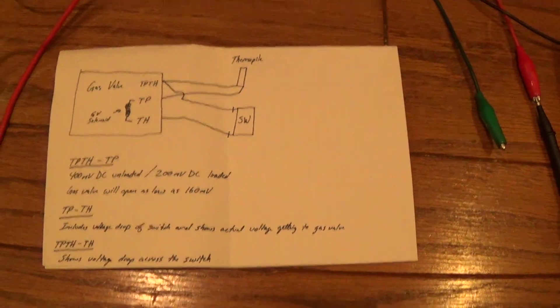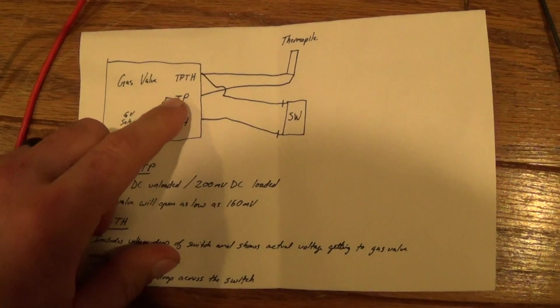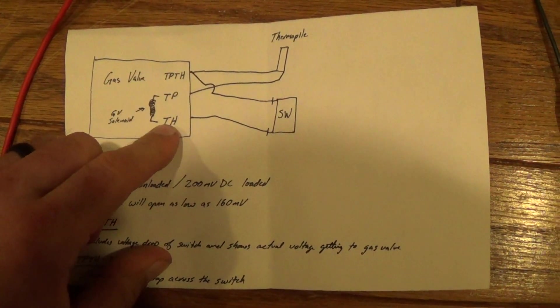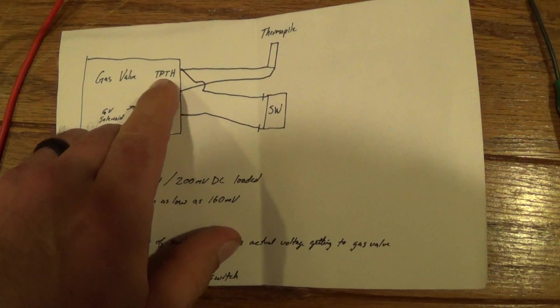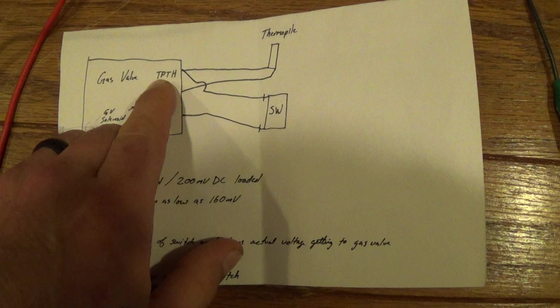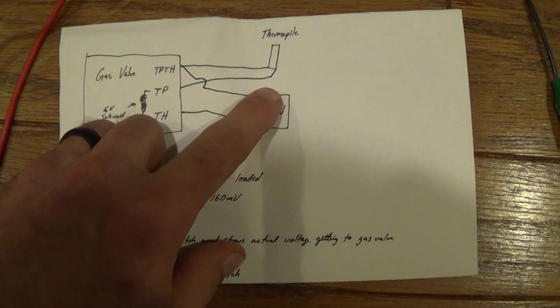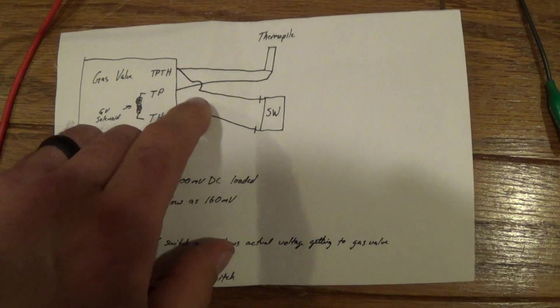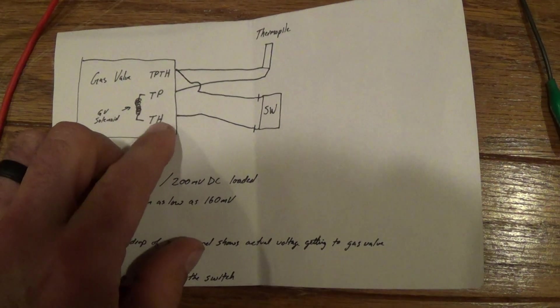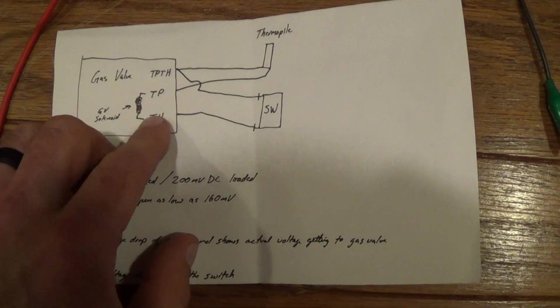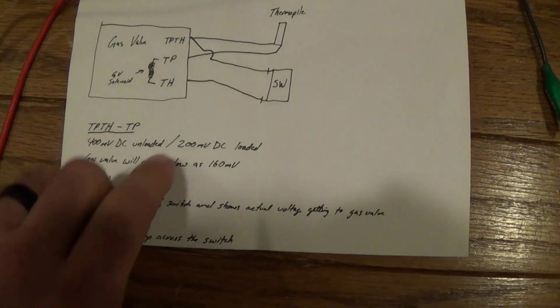On your gas valve you have TP, TH, TP, and TH. The thermopile goes between TP, TH, and TP—TP for thermopile. Then your switch or your thermostat, whatever is turning on the main flame, goes between TP and TH—TH for thermostat.